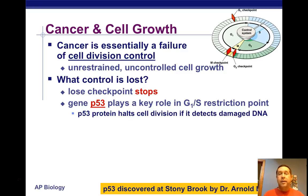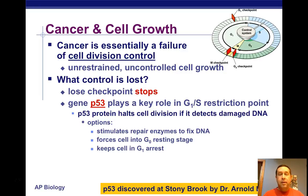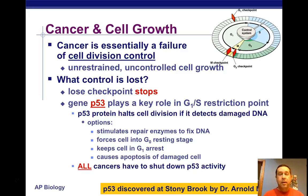P53 normally halts cell division if it detects damaged DNA — if the DNA is not copied properly. It will do one of several things: it may cause the cell to produce DNA repair enzymes to fix the problem, cause the cell to go into a resting state, cause the cell to stay in G1 until the problem is fixed, or cause the cell to go through apoptosis — basically cell suicide — so it doesn't lead to cancer. All cancers have to shut down P53 activity, which is why it's sometimes referred to as the guardian angel gene.